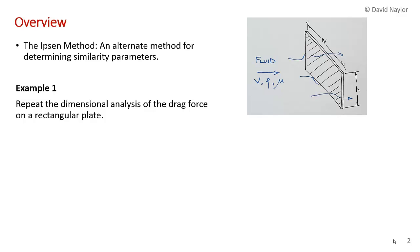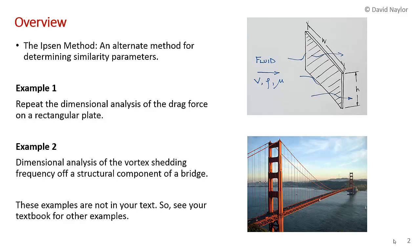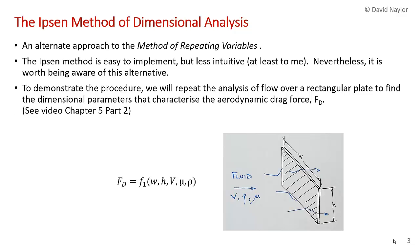First I'm going to repeat the dimensional analysis of the drag force on a rectangular plate — an example we did previously using the method of repeating variables — and then do a new example of the dimensional analysis of vortex shedding off a structural component of a bridge. Neither of these examples are in your textbook. The Ipsen method is easier to implement, though perhaps a little less intuitive, and it's quite a bit faster than the method of repeating variables.